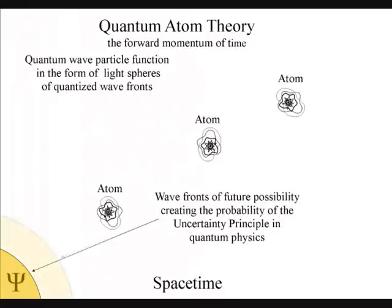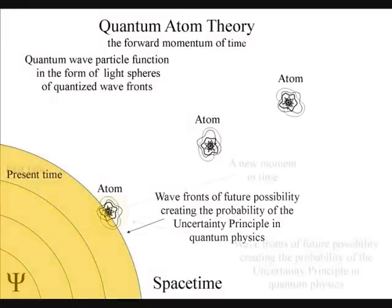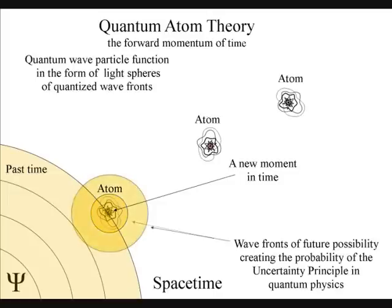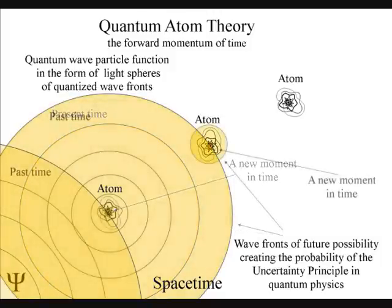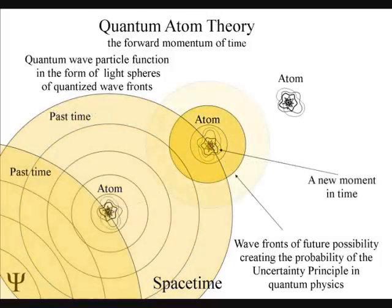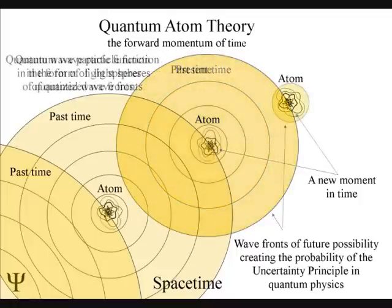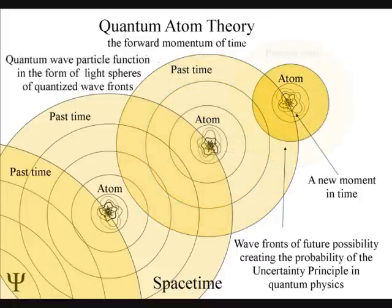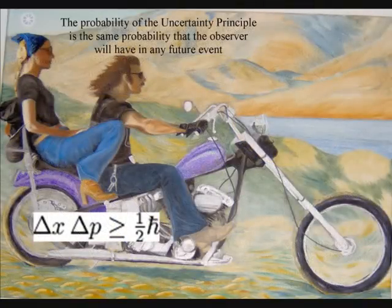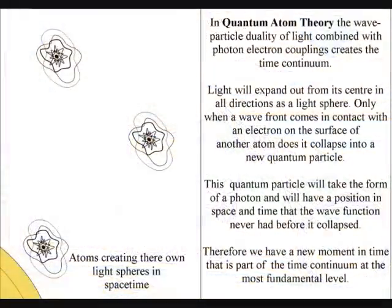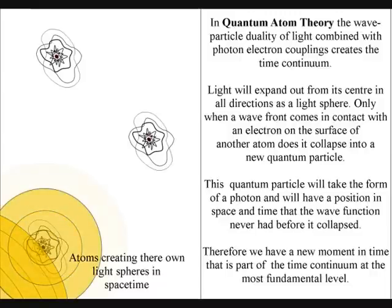In this theory, the wave function represents the time continuum at the most fundamental level. Time only moves forward because the probability of the wave function only works one way. We always know the position or momentum of a quantum particle in the past. The uncertainty principle of quantum physics is the same uncertainty that the observer will have with any future event. Put very simply, the light emitted by an atom now is going to be absorbed by another atom later on, and this is the fundamental process that creates the time continuum.